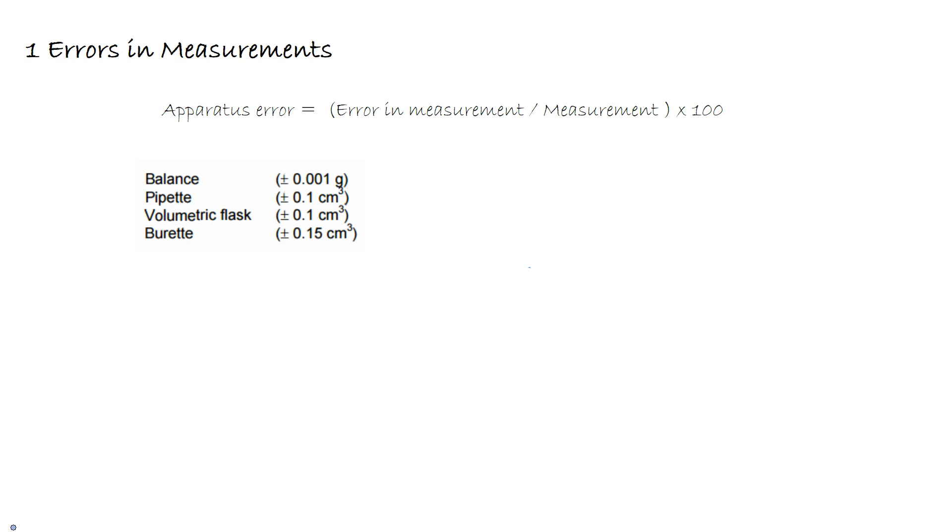Let's look at an example of a titration experiment. Imagine a student weighs out 1.245 grams of a sample to make up a standard solution. The apparatus error here is going to be 0.001 divided by 1.245 multiplied by 100, giving an apparatus error of 0.08%.